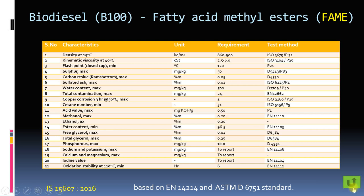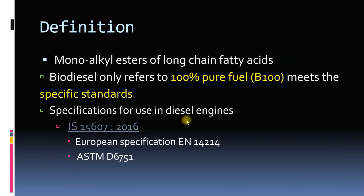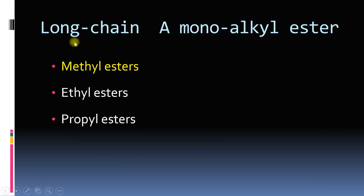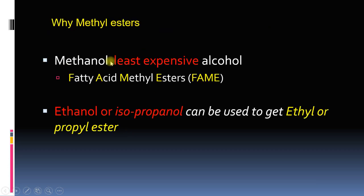The biodiesel produced should meet these standards to be used as a blend in a diesel engine. Looking at the definition, monoalkyl ester means it can be methyl ester, ethyl ester, or propyl ester, but the most common is methyl ester. Methyl ester is most common because methanol — used to produce it — is the least expensive alcohol.